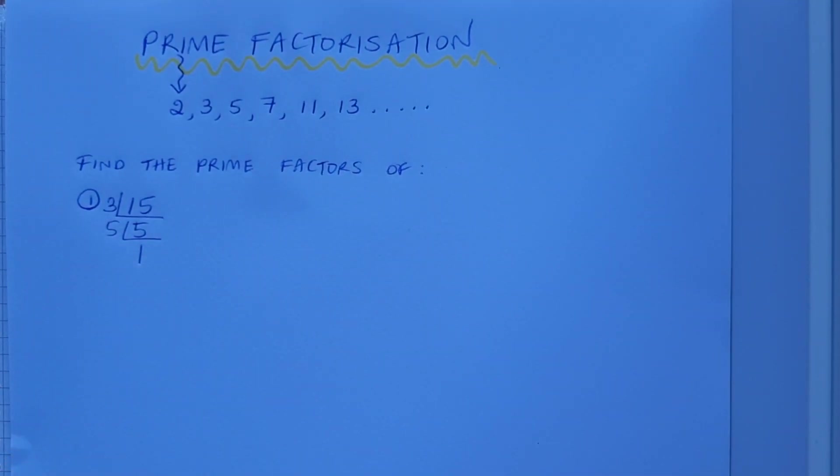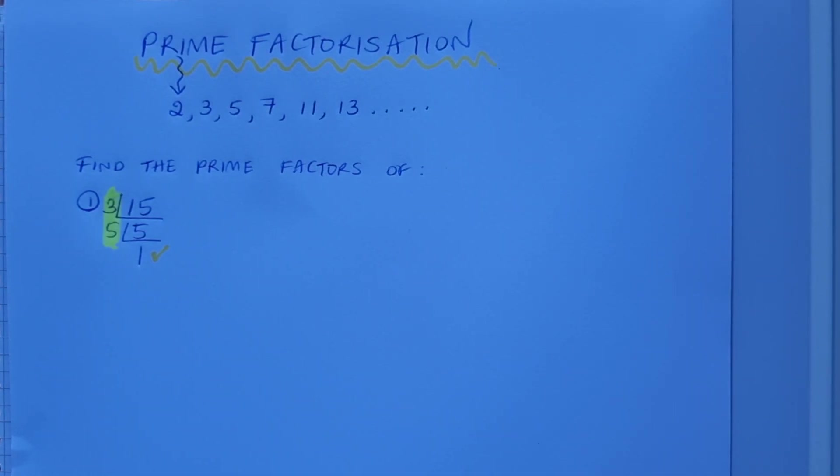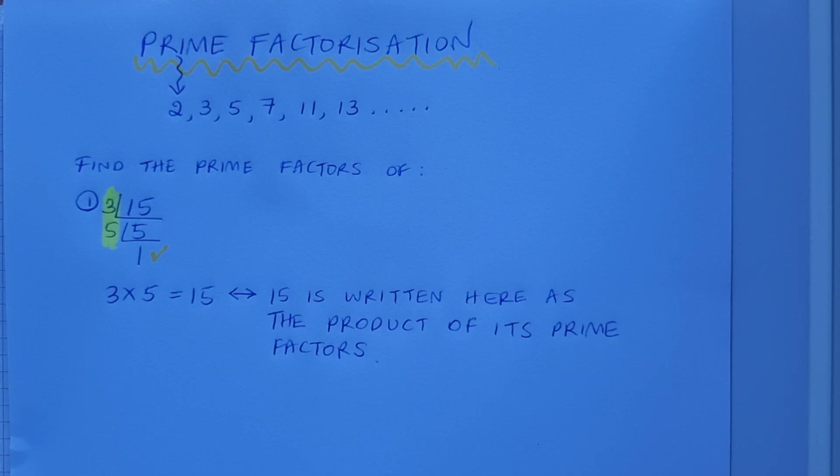Once I get as far as 1, I know I'm done and I can find my prime factors down the side of my calculation. It's the 3 and the 5. So I'm going to write down 15 as 3 by 5, and so here 15 is written as the product of its prime factors.